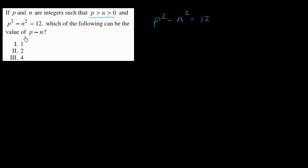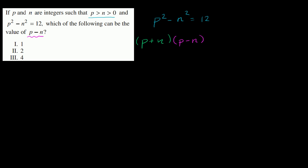Which of the following can be the value of p minus n? One thing that might jump out at you is that you could factor p squared minus n squared — this is a difference of squares. When you factor it, one of the factors is p minus n. So this can be factored as p plus n times p minus n, equal to 12.